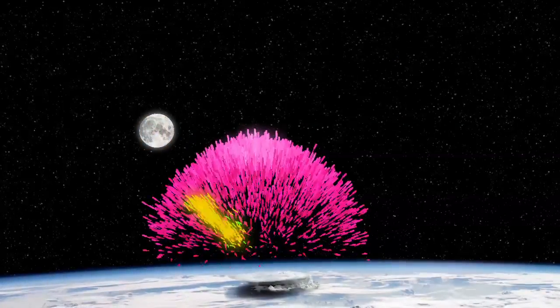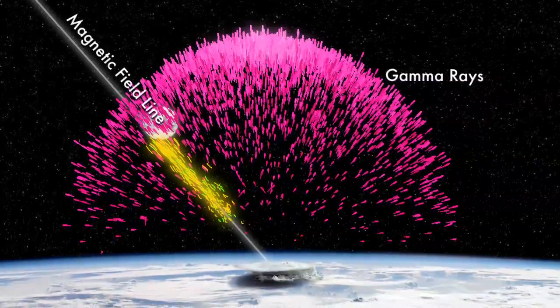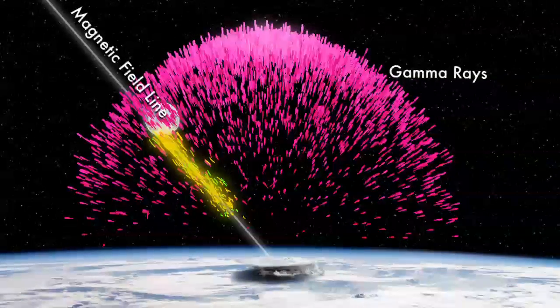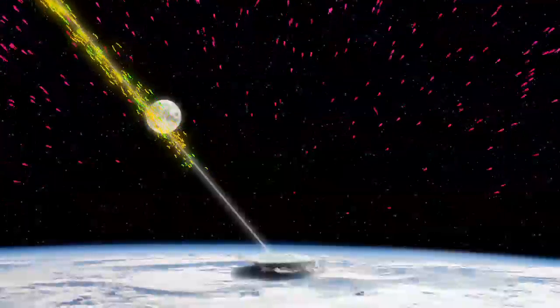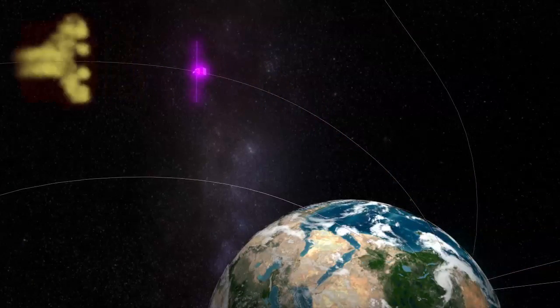The gamma rays travel in straight lines, but the charged particles spiral along lines of Earth's magnetic field, and that was the route to Fermi. The particles created by the TGF rode upward on magnetic field lines and then struck the spacecraft.